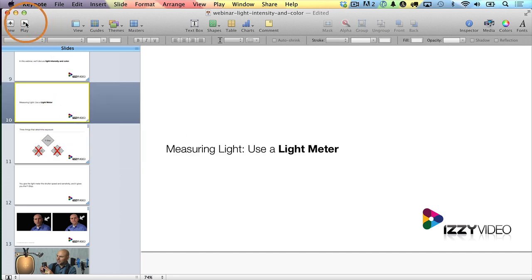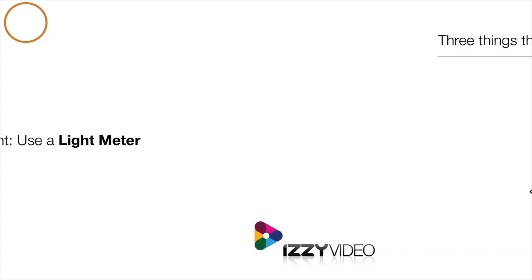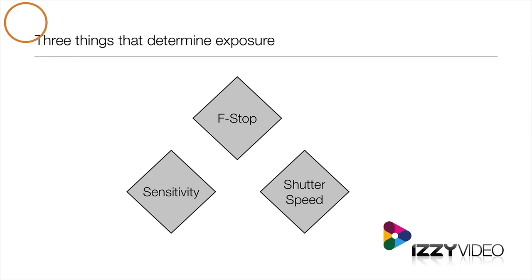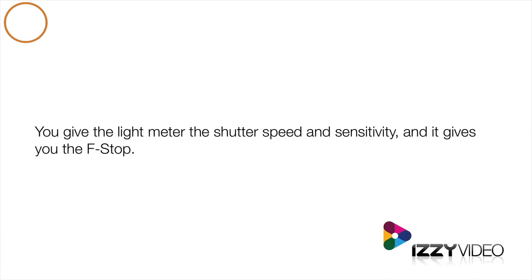Let me go to this one here — I'm going to hit Play. You can see if I hit the spacebar, I go to the next slide. Nothing happens here until I hit the spacebar again, and now a little red X appears — that's a little animation build. And then I hit the spacebar again, another red X appears, and then if I hit the spacebar again, I see another transition.